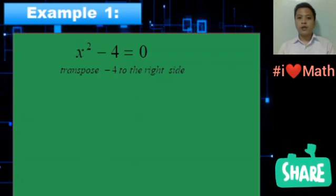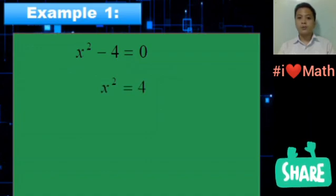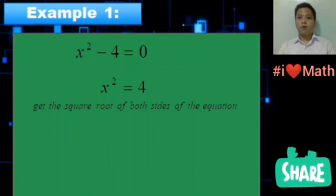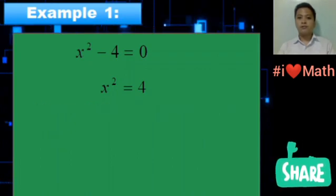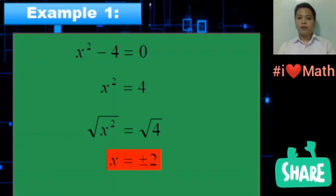Transpose negative 4 to the right side, and we will have x² = 4. Get the square root of both sides of the equation. We will have x = ±2.